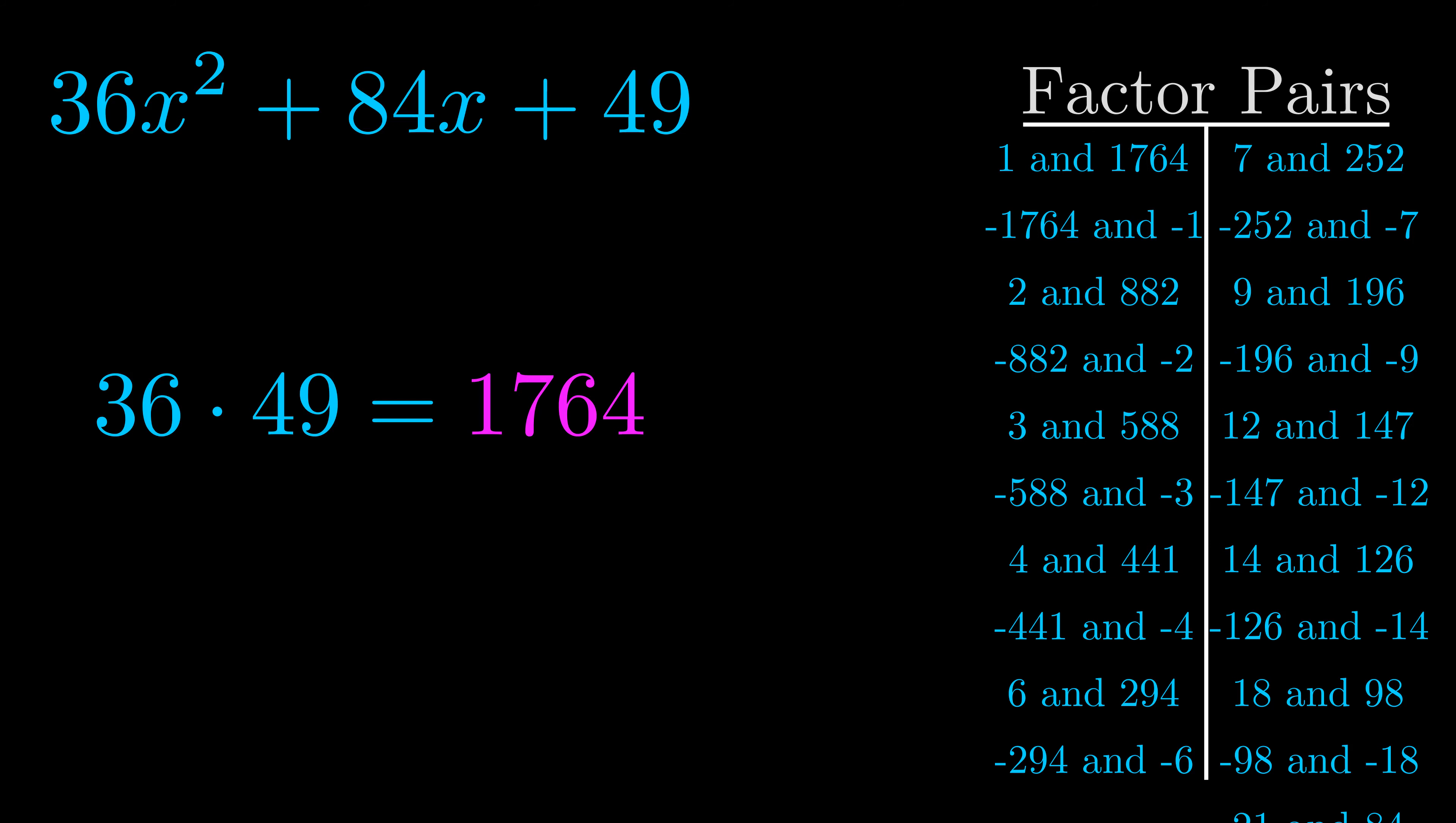Now once you have these factor pairs, the goal is to find which of these pairs adds to the b value. The b value is the coefficient on the x term.